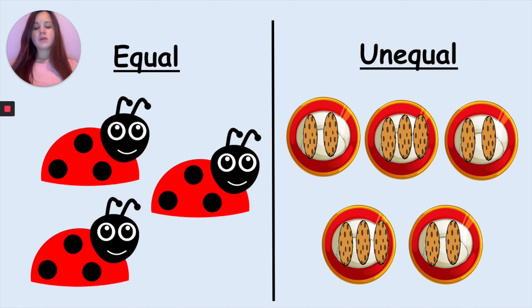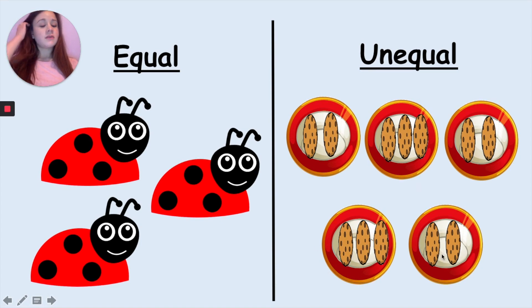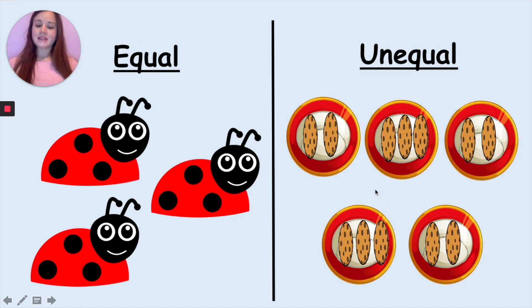They are not the same amount on each plate. So here we have two cookies, here we have three, here we have two, here we have three and here we have two. So they are unequal amounts of cookies because they are all different on each plate.